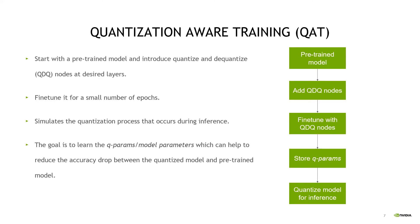Alternatively, in QAT, we start with a pre-trained model and introduce quantize and dequantize nodes at desired layers. QDQ nodes is a single operation which performs FP32 to INT8 and INT8 to FP32 conversion, thereby simulating the quantization process that occurs during inference. We fine-tune this quantized model for a few epochs and then store the final Q params. The goal is to learn the Q params or model parameters which can help to reduce the accuracy drop between the quantized model and the pre-trained model.